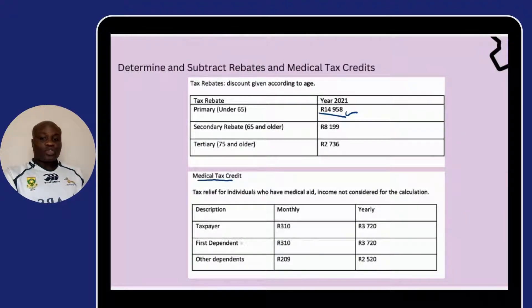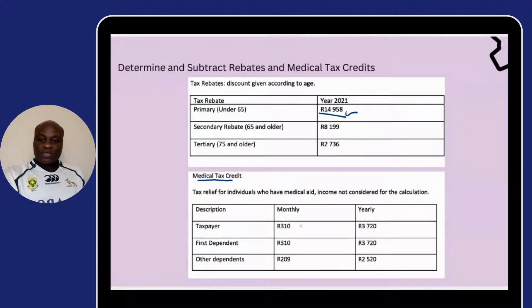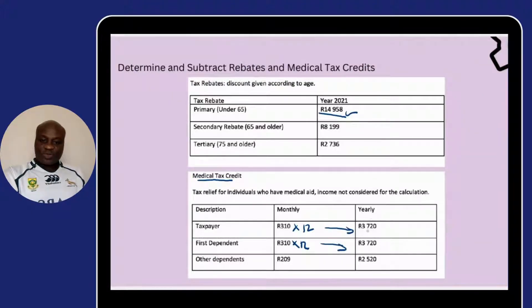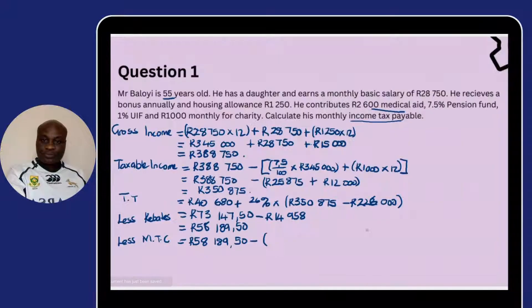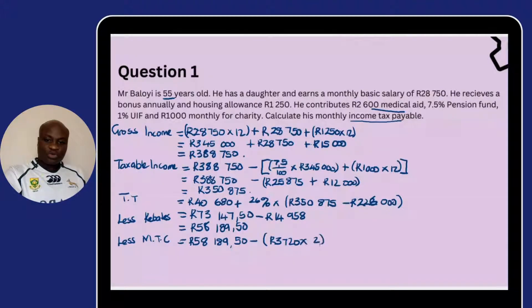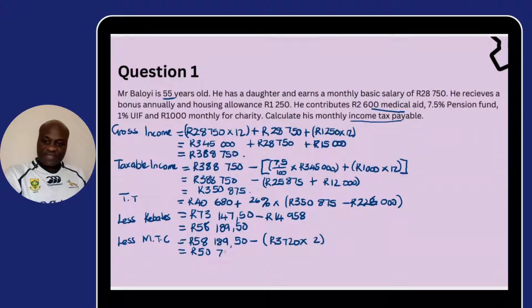For the taxpayer, there is a set credit amount, and the same applies for the first dependent. We need to make it an annual figure by multiplying by 12, which gives R3,720 per person per year. We then multiply R3,720 by two because there are two people. So R58,189.50 minus R3,720 multiplied by two. When we solve that and subtract, we get R50,749.50.